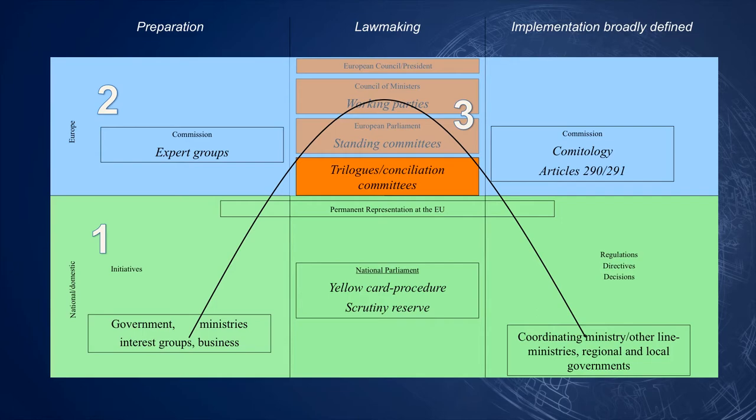During the legislative process, a conciliation committee can be formed when Parliament and the Council do not agree on a proposal. This committee may come together at the end of the ordinary legislative procedure. Another committee that is relevant is the Trilog, which is an informal meeting between the Commission, the Council, and Parliament at the beginning of the process. An agreement at this stage, which is called an early agreement, saves the lawmakers a lot of time.